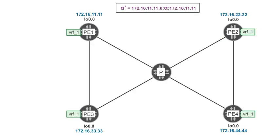RSVP signals point-to-multipoint LSPs as a set of sub-LSPs signaled in a nearly independent way. In this case, there are three sub-LSPs targeted to PE2, PE3, and PE4 respectively.